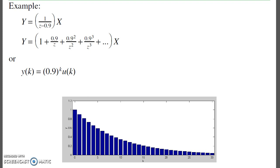For example, if I want to implement the filter 1 over z minus 0.9, what I could do is cross multiply and say y of k is 0.9 y of k minus 1 plus x of k.